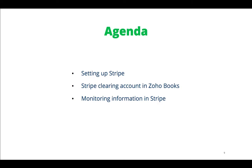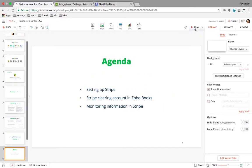I'll start off by talking about setting up your Stripe integration within Zoho Books. Then we're going to talk about the Stripe clearing account within Zoho Books, where you can see the transactions and the account balance from your Stripe account. Finally, I'll take you to the Stripe dashboard and show you how to view or generate different information there. With that, let's get started.